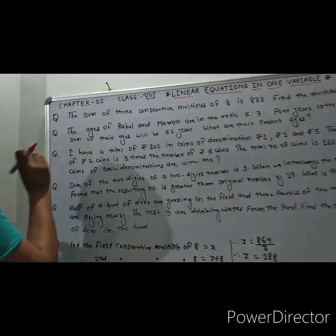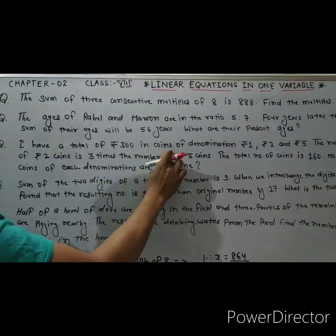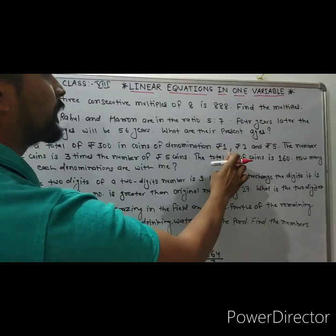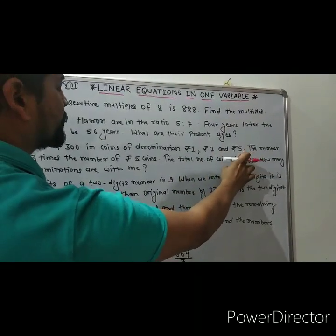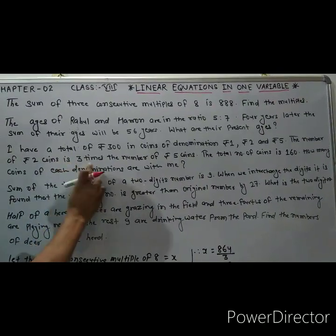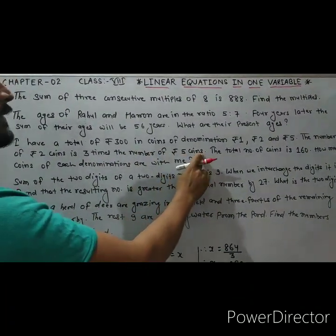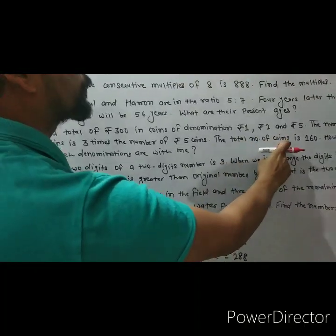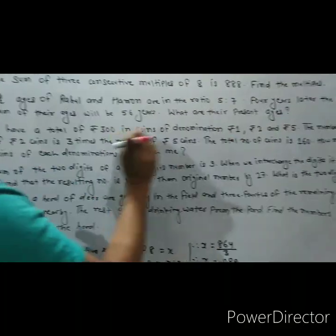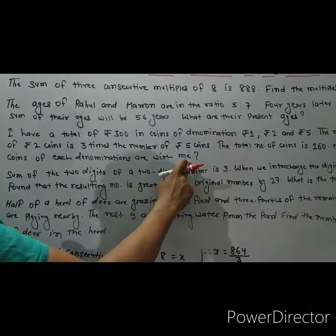Question number 3: I have a total of rupees 300 in coins of denomination rupees 1, rupees 2, and rupees 5. The number of 2 rupees coins is 3 times the number of 5 rupees coins. The total number of coins is 160.